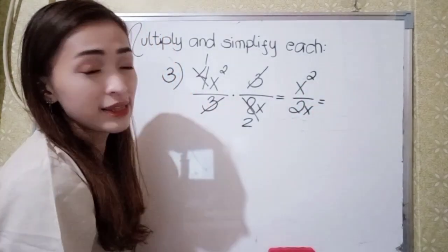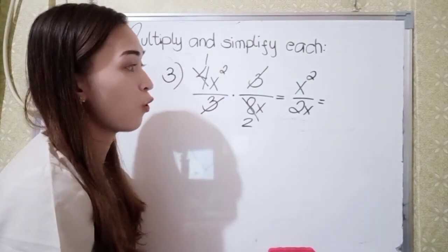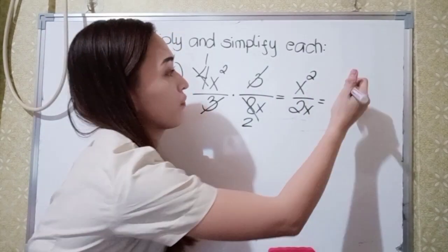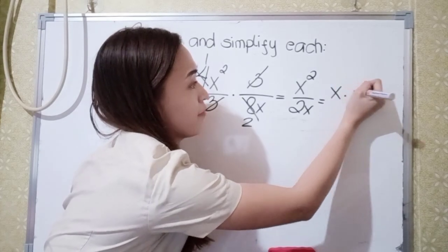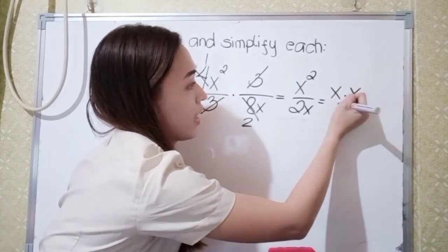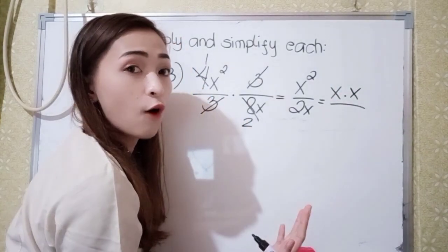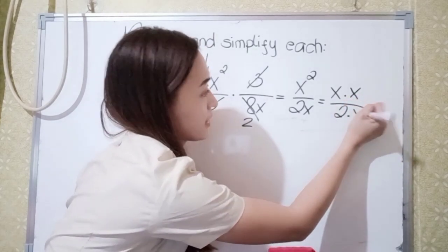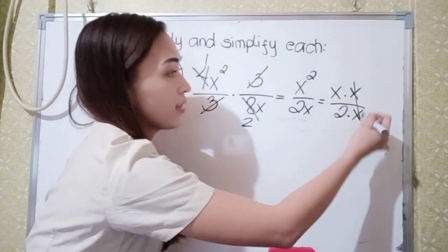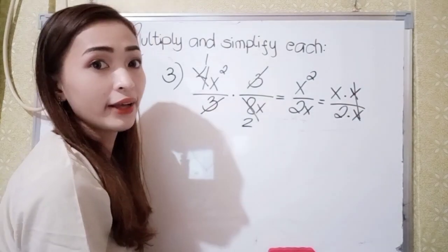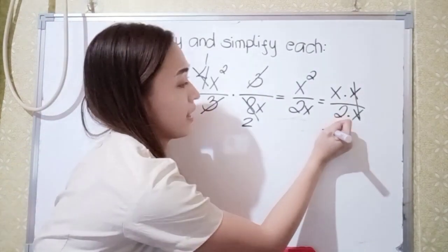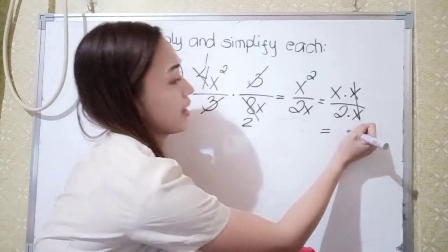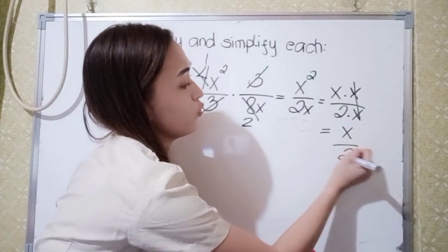Now we can simplify x squared over 2x. The factors of x squared are x times x, and the factors of 2x are 2 times x. So x divided by x is 1, that cancels. Our final answer in number 3 is x over 2. That is very easy.